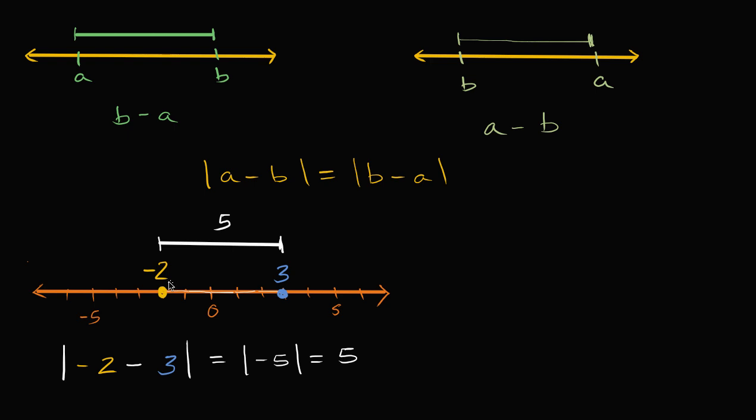So notice I subtracted the larger number from the smaller number. I got a negative value, but then I took the absolute value of it that gave me the actual distance between these two numbers.